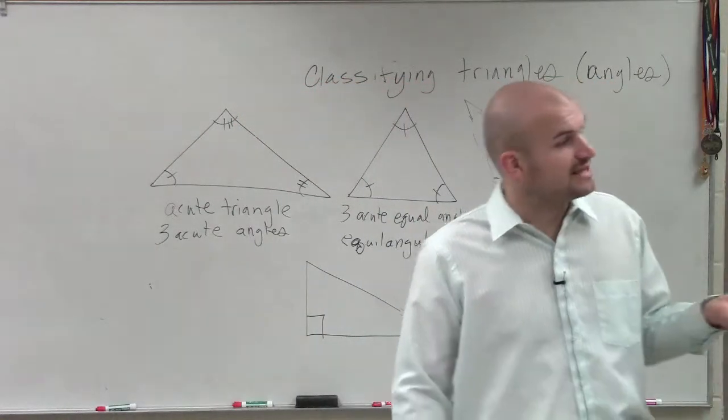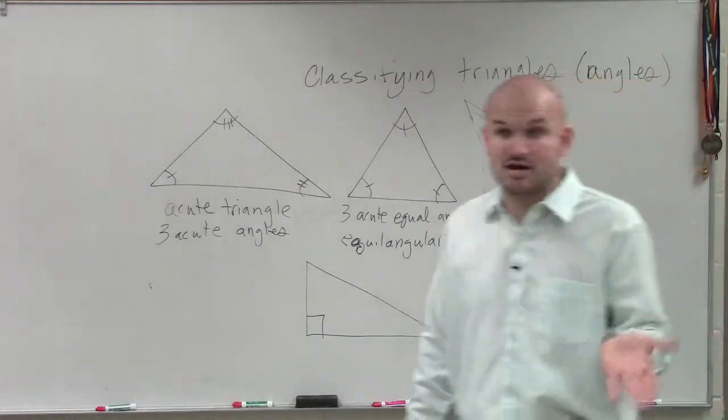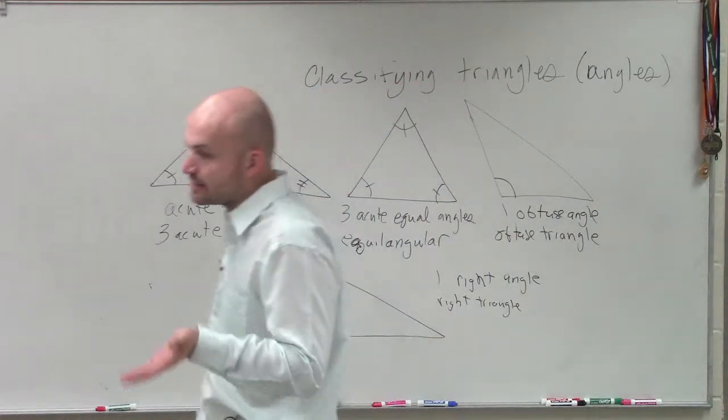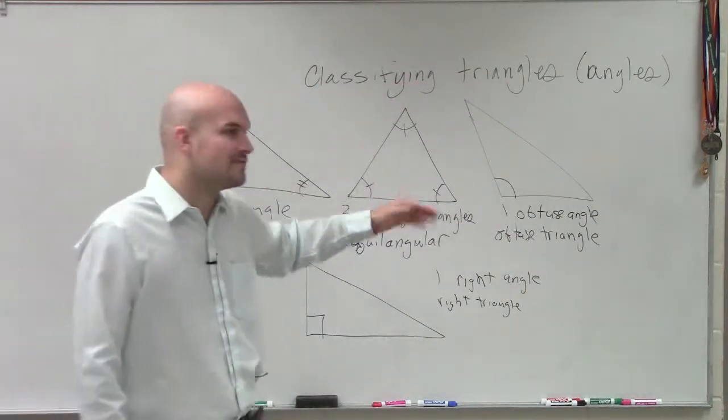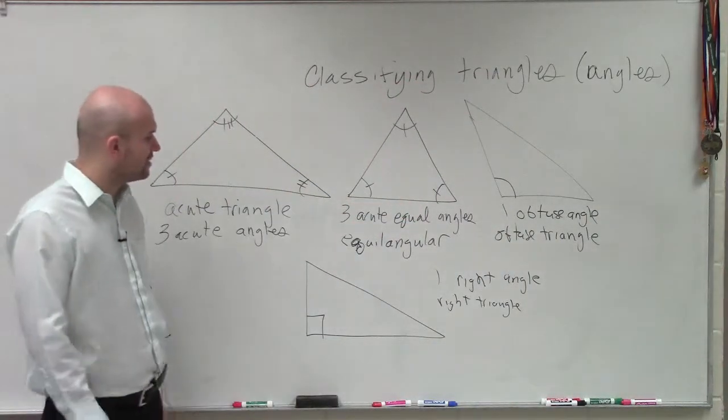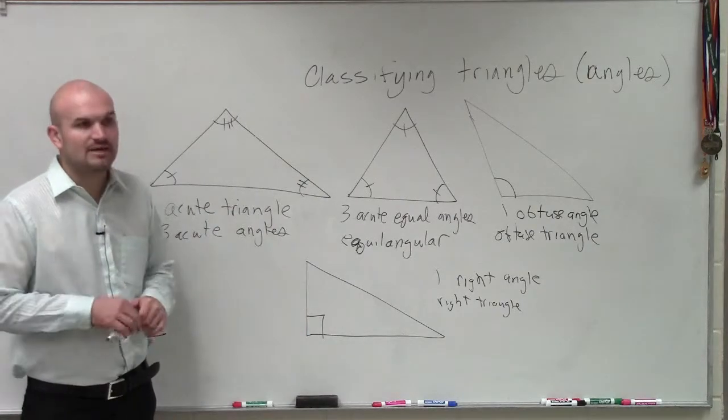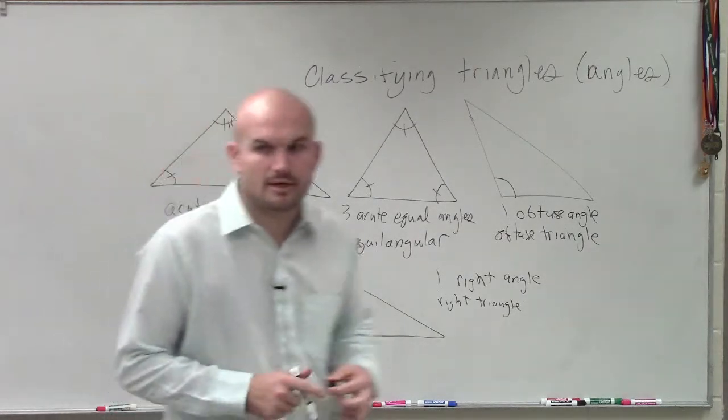Remember, right triangles tell us if we can use Pythagorean theorem, right? And that triangle has to be a right triangle for us to use Pythagorean theorem. And we're going to use it a lot for some other examples as well. But therefore, that's how we classify triangles by determining their angles.